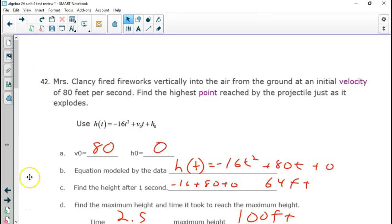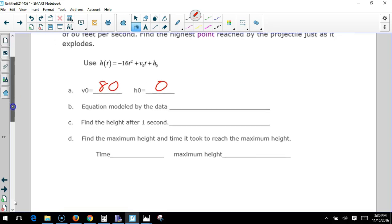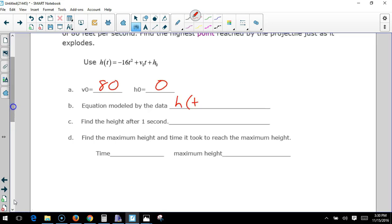Graphs for 42 and 43 will be added to the next page. Initial velocity is 80 and she fired it from the ground. So the ground is at 0 and the initial velocity is 80. The equation is height as a function of time equals negative 16t squared plus 80t plus 0.